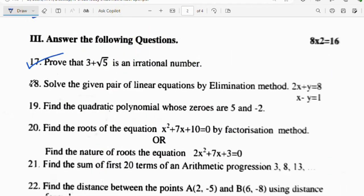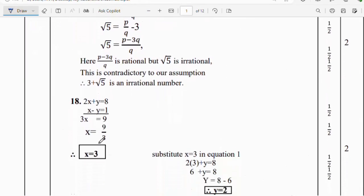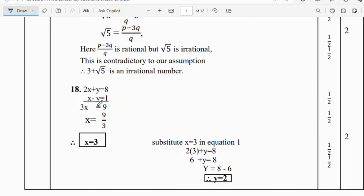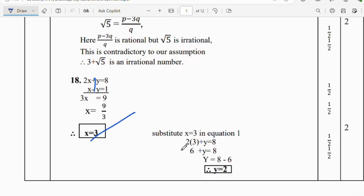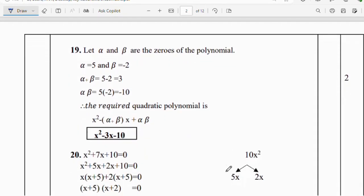Question number 18: Solve the given pair of linear equations by elimination method. 2x plus y equals 8, x minus y equals 1. Consider equation 1 and 2. Here plus and minus, directly you cancel these two. 3x equals 9, x equals 3. Substitute x equals 3 in equation 1 or equation 2. We will get the y value, y equals 2. Very easy and these questions are compulsory questions.